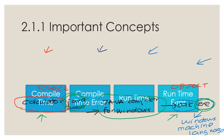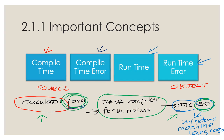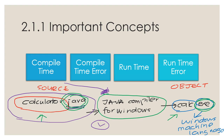Next, let's look at the remaining four concepts. The first one is compile time — the time taken during compilation. So when our Java compiler is compiling calculator.java, the time taken is called the compile time. Therefore, a compile time error is any error detected during compilation — for example, a syntax error such as a missing semicolon.